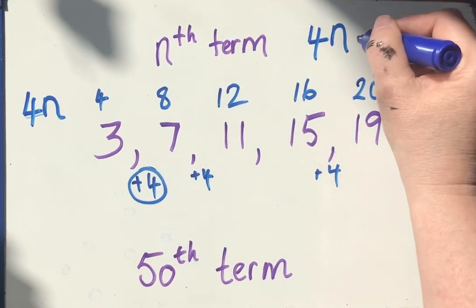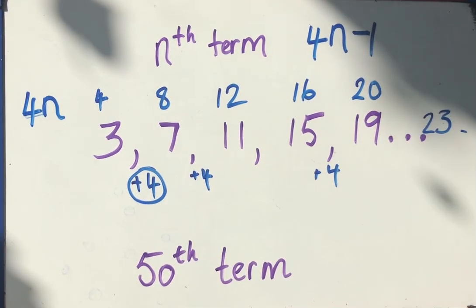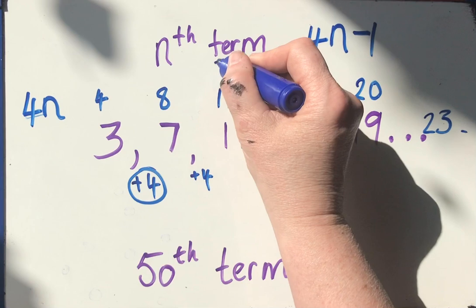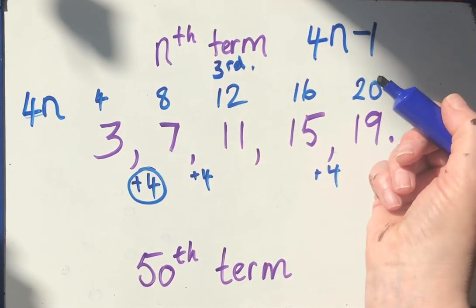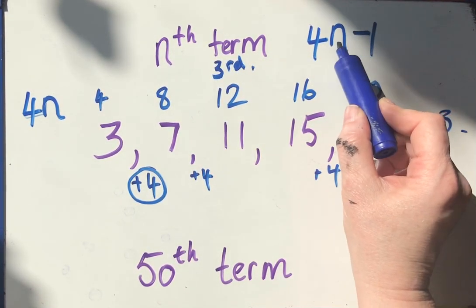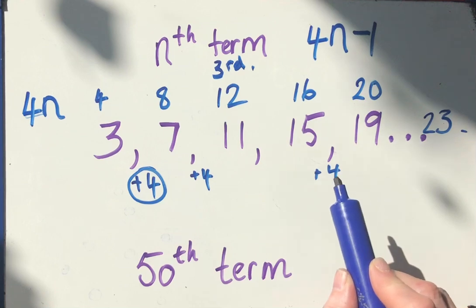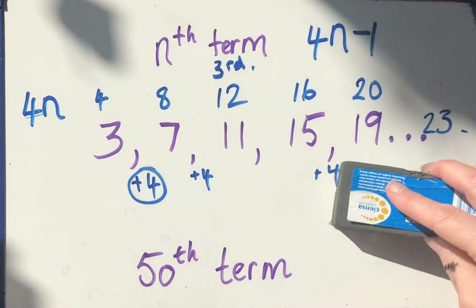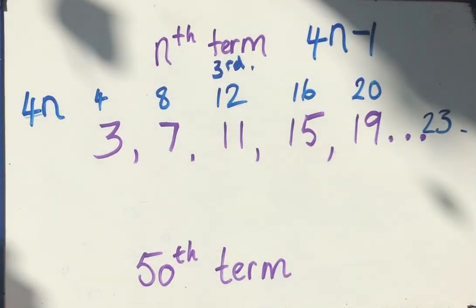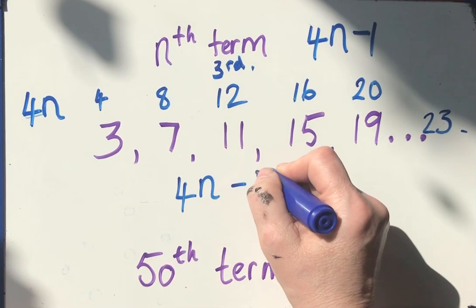I just want to take away 1. 4n minus 1. I can check that out by substituting. Let's say I take the third term when n equals 3. 4 times 3 is 12, 12 take away 1 gives me 11. So this sequence 3, 7, 11, 15, 19 is the 4 times table take away 1 each time.